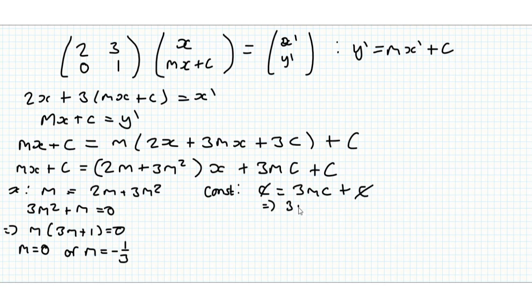So the equation we get is 3mc is equal to 0. So when m is equal to 0, it doesn't matter what c is, c can just be any real number. So that lets us know that any line of the form y equals c is invariant. And that's for all c in the real numbers.